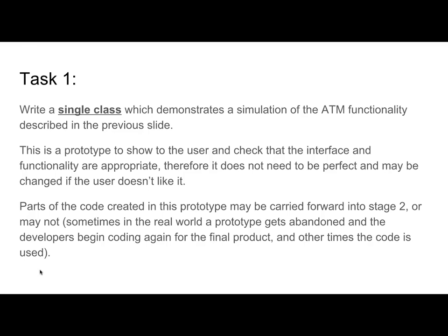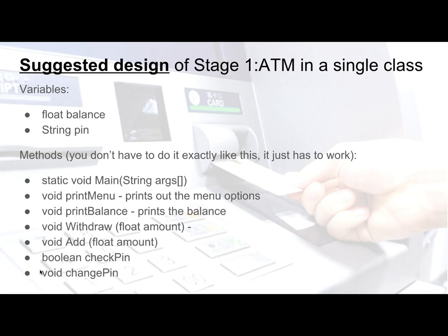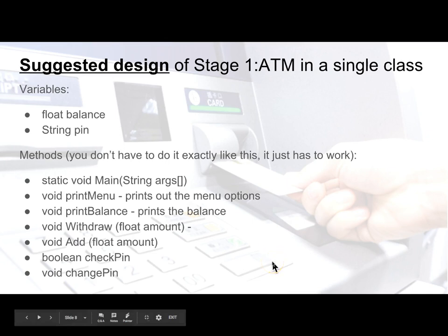It should be in a single class — a Java program with a single main class — but can have functions on it. In fact, I'd recommend using functions. The suggested design is that you have at least two variables: one being the pin and one being the balance, static at the very start of the class as class-level variables.